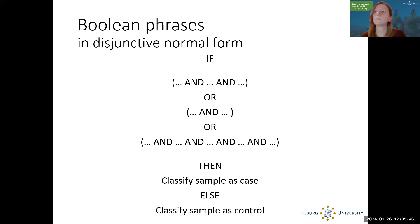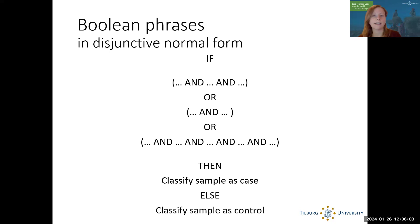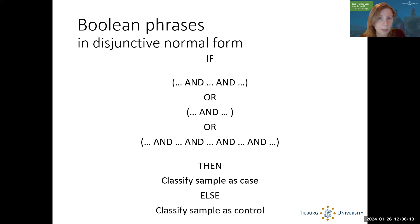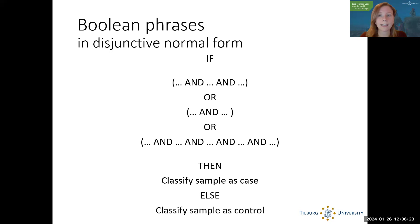I will go one step further — into developing machine learning models that impose a specific form. In this talk, I look at one specific form that is especially relevant for genetics data: a Boolean phrase in disjunctive normal form, or DNF. A Boolean phrase in DNF looks as follows: if a sample has characteristics A and B and C (an AND clause), or they have characteristics X and Y, or a whole bunch of them, then we classify them as a case, otherwise as a control. We're setting conditions for a sample to be the case. The size of AND clauses and the number of AND clauses are hyperparameters in the model.